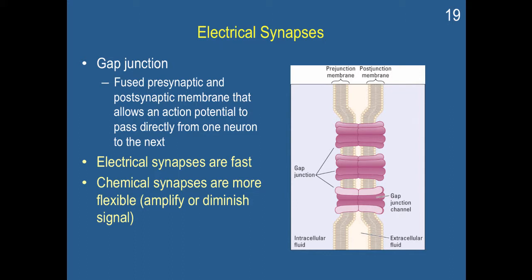So electrical synapses are fast, but these chemical synapses provide us with the flexibility that we need to be able to amplify or diminish signals in accordance with what is currently adaptive for our environment.